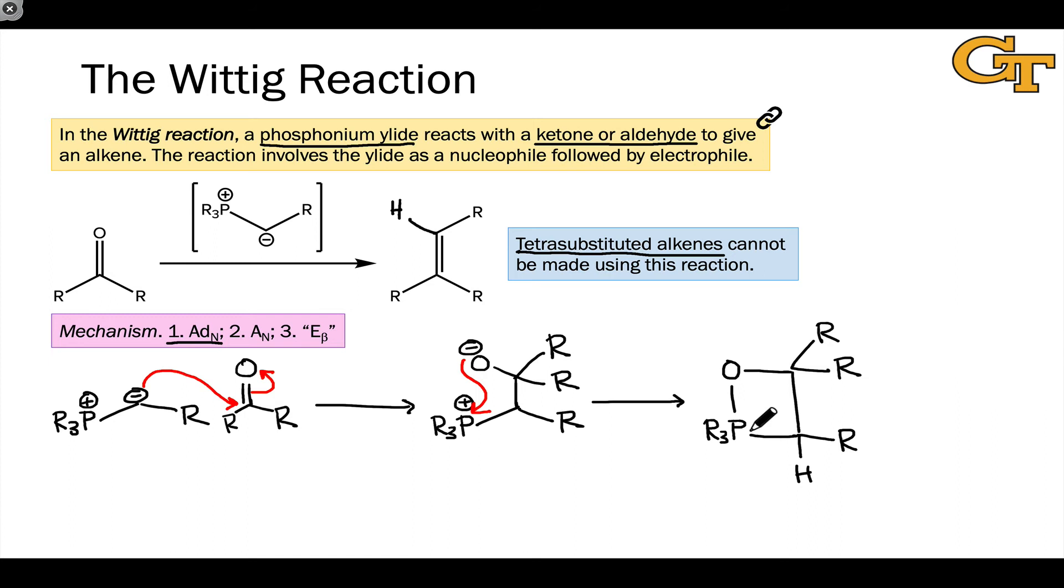This gives the alkene product, I'll draw that first, and the byproduct of this reaction is a molecule called a phosphine oxide, in which there is a phosphorus oxygen double bond and three R groups linked to phosphorus.